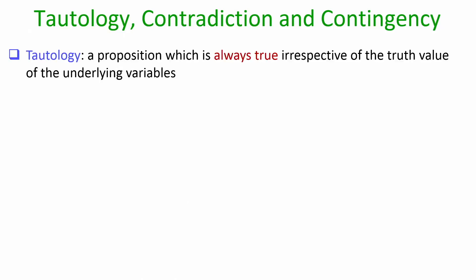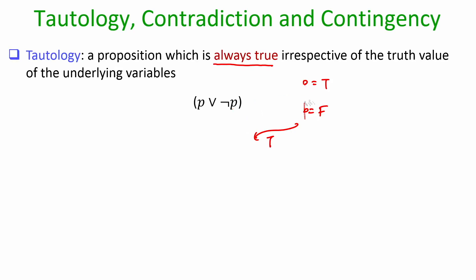Let us next define tautology, contradiction, and contingency. A tautology is a proposition which is always true irrespective of what truth value you assign to the underlying variables. For example, the disjunction of P and negation P is always true — whether P is true or false, this statement is always true, and hence it is a tautology.